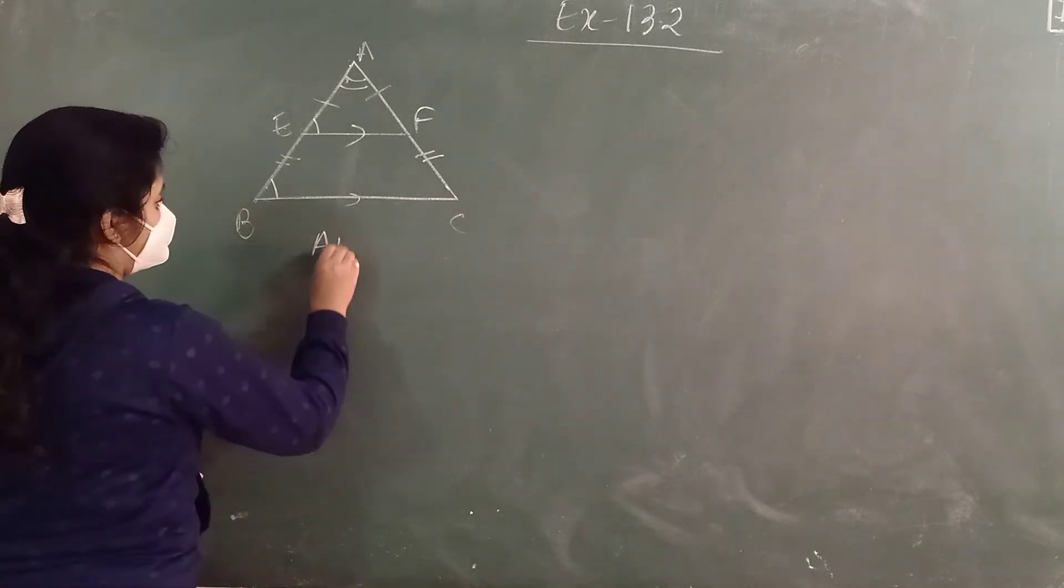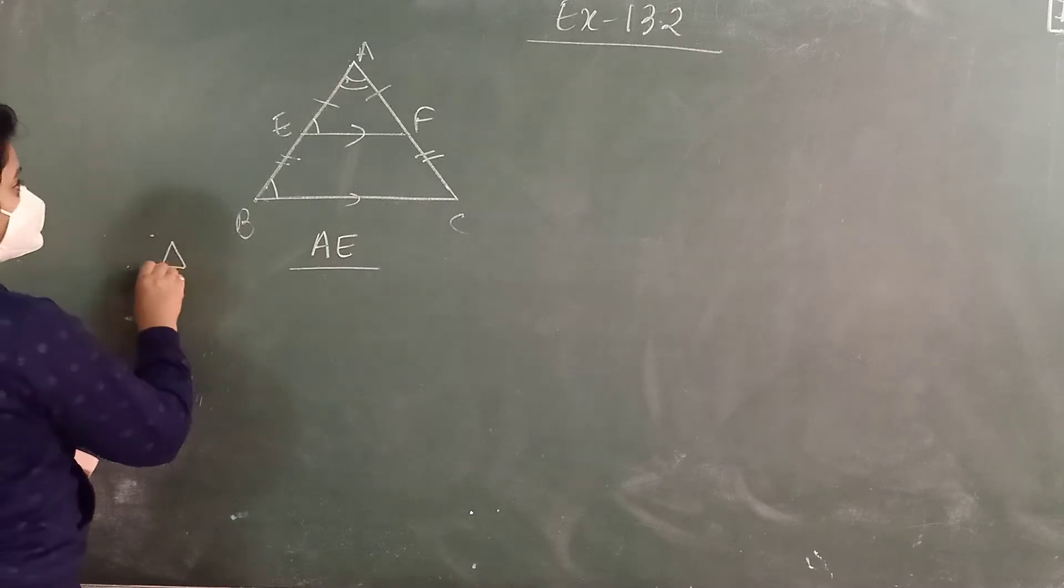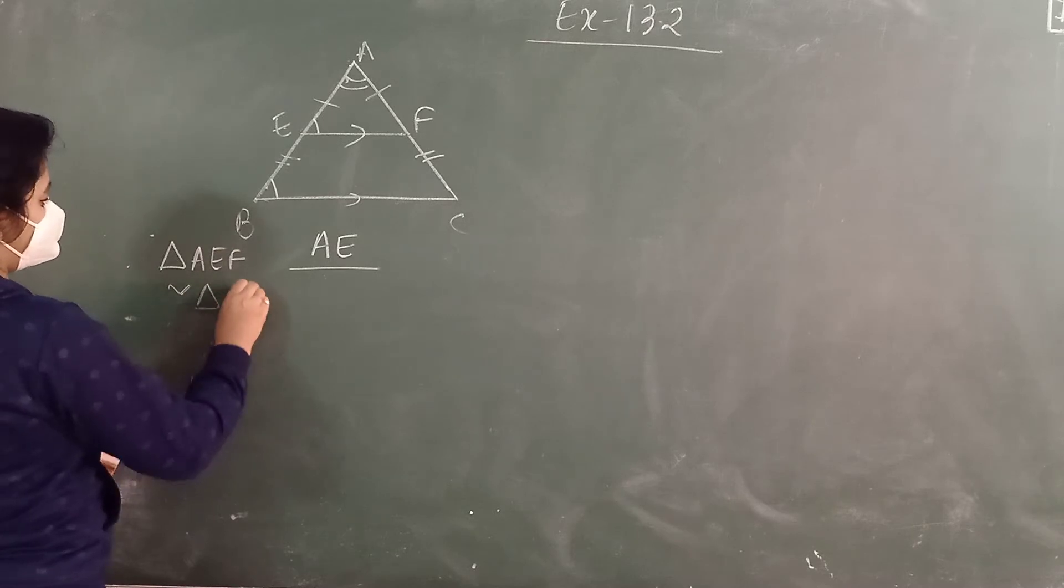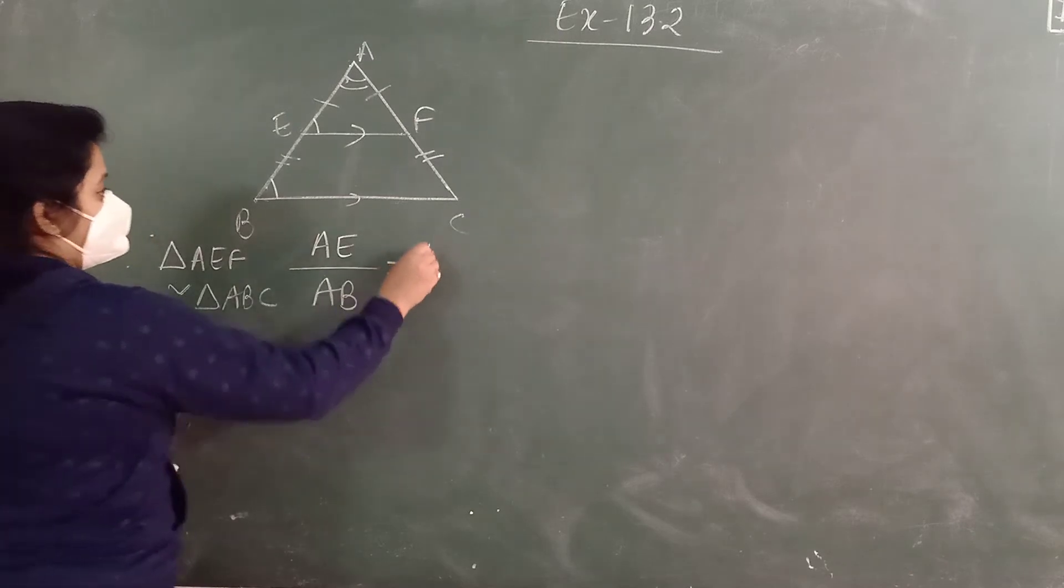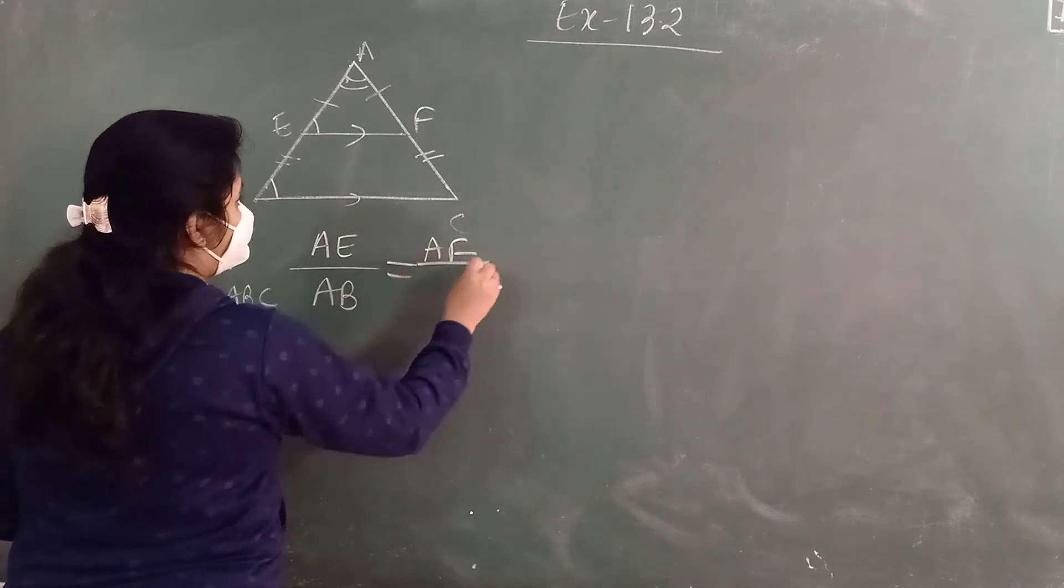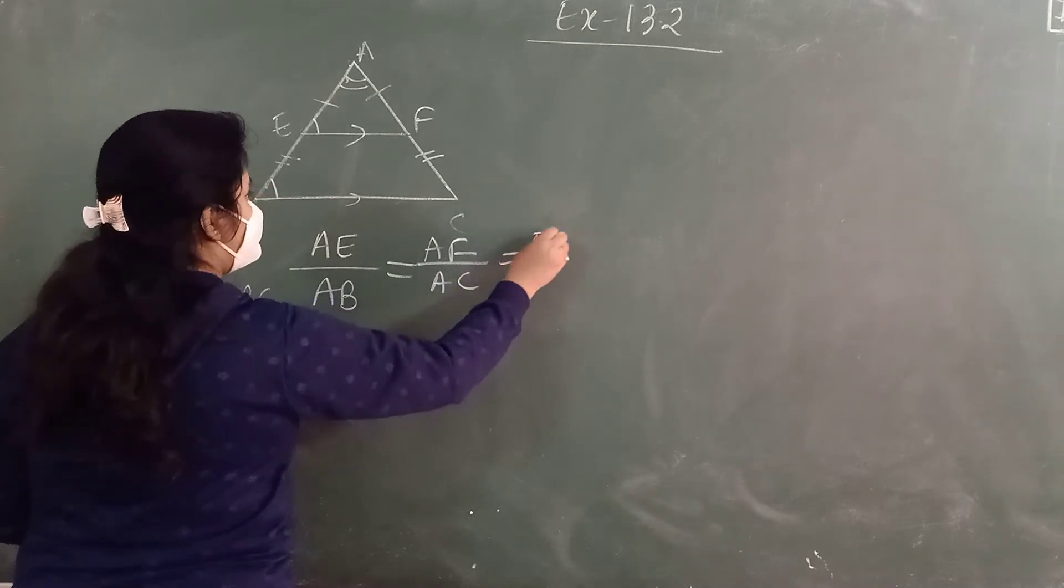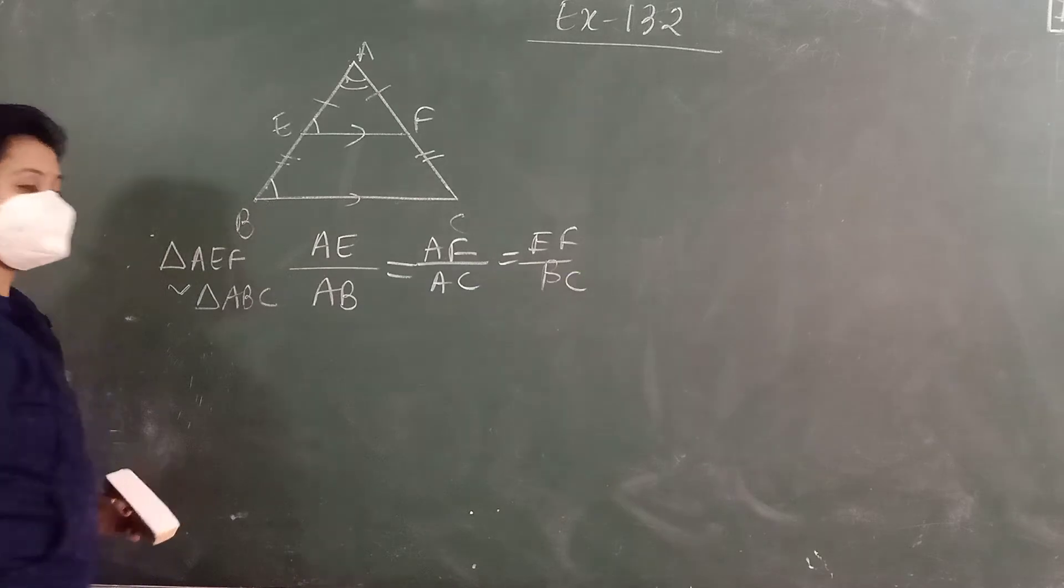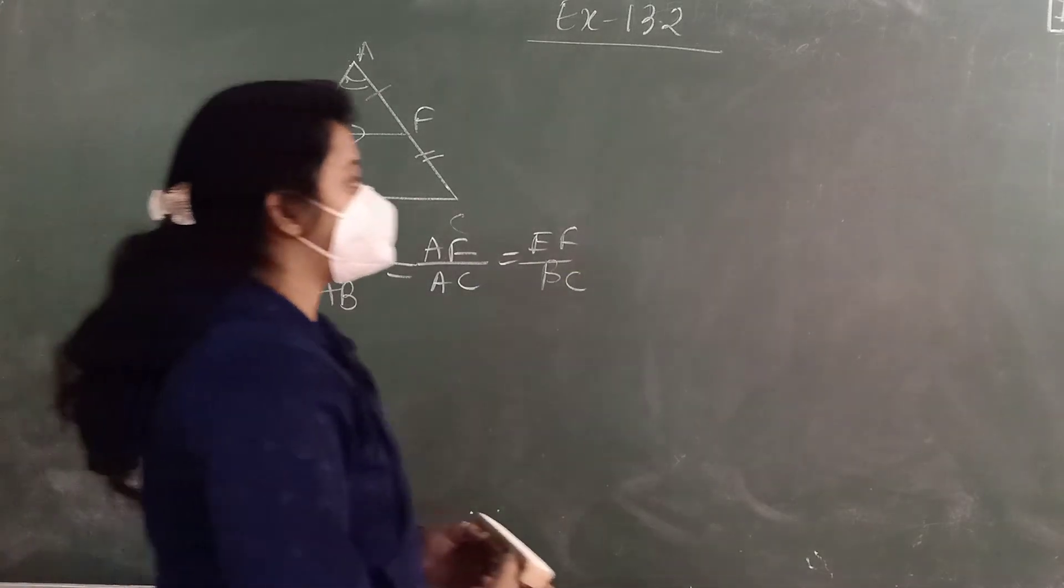If they are similar, then the ratio of their corresponding side is also equal. So we can say that if triangle AEF similar triangle ABC, then we can write AE by AB is equal to AF upon AC. This quantity can apply. So let's begin the exercise.